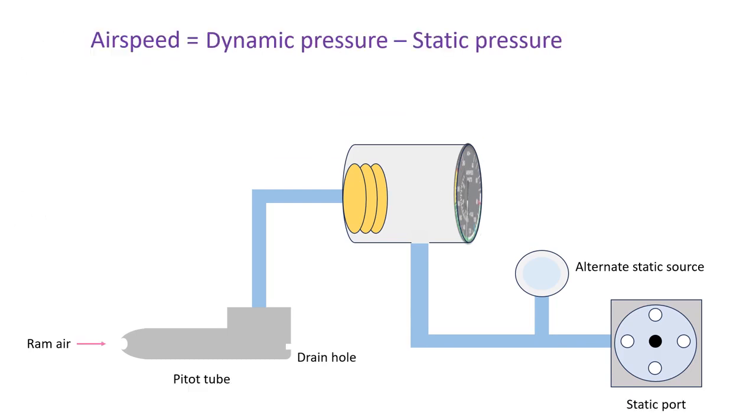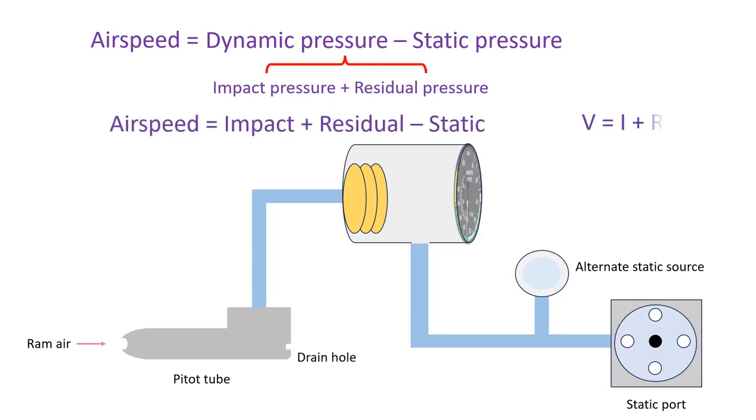See the tiny opening at the back of the pitot tube? That's where any moisture gets vented out, and a bit of pressure inside the tube sneaks out too. The total pressure inside pitot system isn't just the ram air hitting the tube, it's that impact pressure plus whatever is left after some escapes through the drain hole. So, the airspeed can be broken down into the impact pressure plus the residual pressure minus the static pressure, simplified as V equals I plus R minus S.